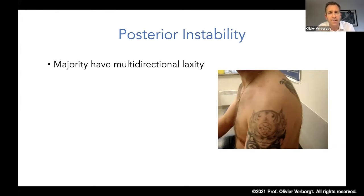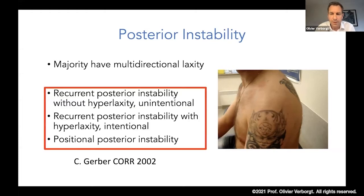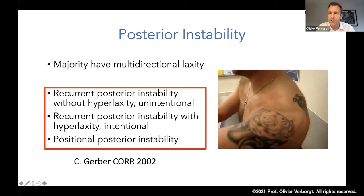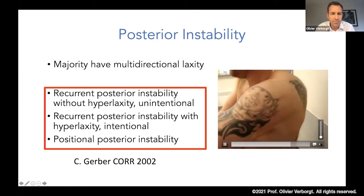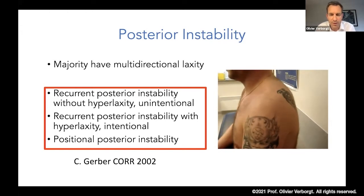Another important thing to realize is that for posterior instability, a lot of these patients have a multi-directional laxity that is not always symptomatic but sits on top of their problem. I think it's important to classify them into three classes: there's the typical recurrent posterior instability without hyperlaxity and unintentional — I think that's the best group. There is also a group you don't want to treat surgically: those with intentional instability with hyperlaxity and scapulothoracic problems. Then there's a third group, the positional posterior instability, which is a little in between, and I think there are some indications to do surgery on these ones.